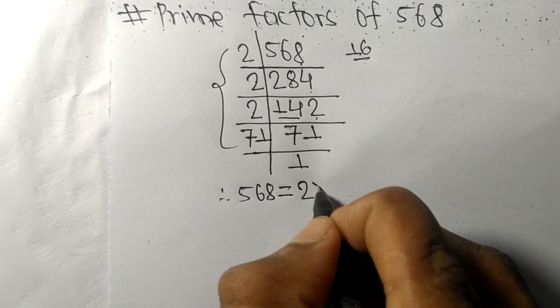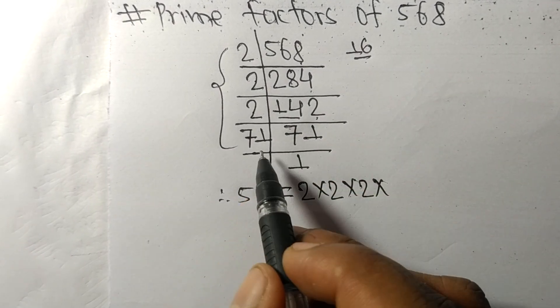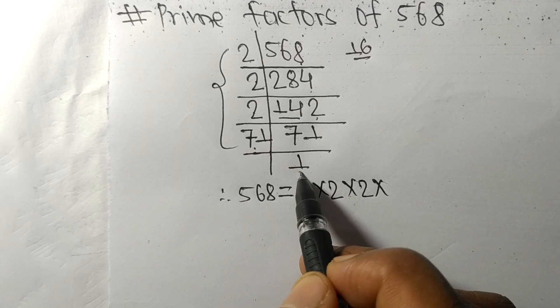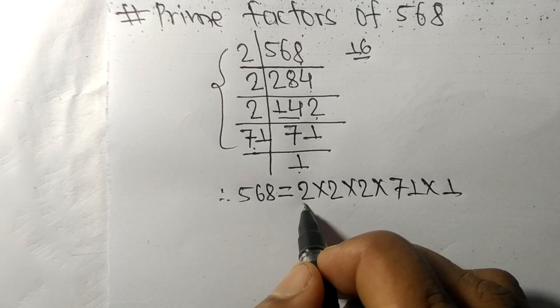So 2 cubed times 2, and at last 71 and 1.